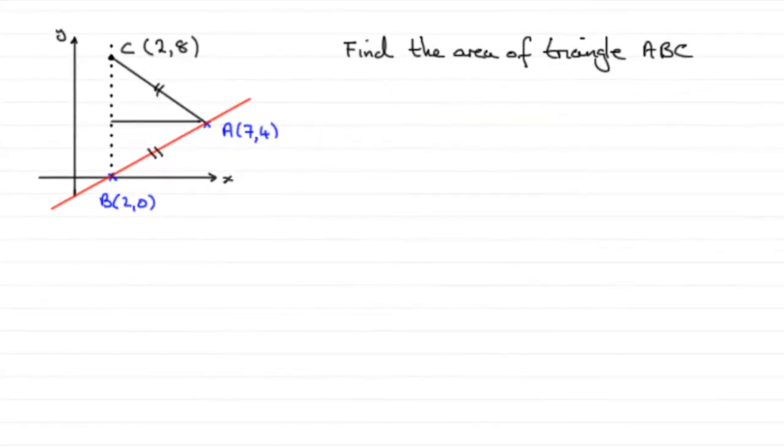I've got a nice easy one to finish with. We've got to find the area of the triangle ABC. And to find the area of a triangle, the first formula that springs to mind is half base times height.